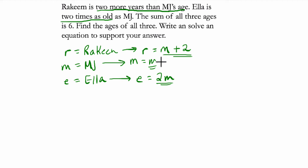By using MJ or M, we can define both Rakim and Ella, and now we can put these things together. It says the sum, so we're adding, of all three ages. So MJ's age, Rakim's age, which is M plus two, and Ella's age, which is two M, is six.